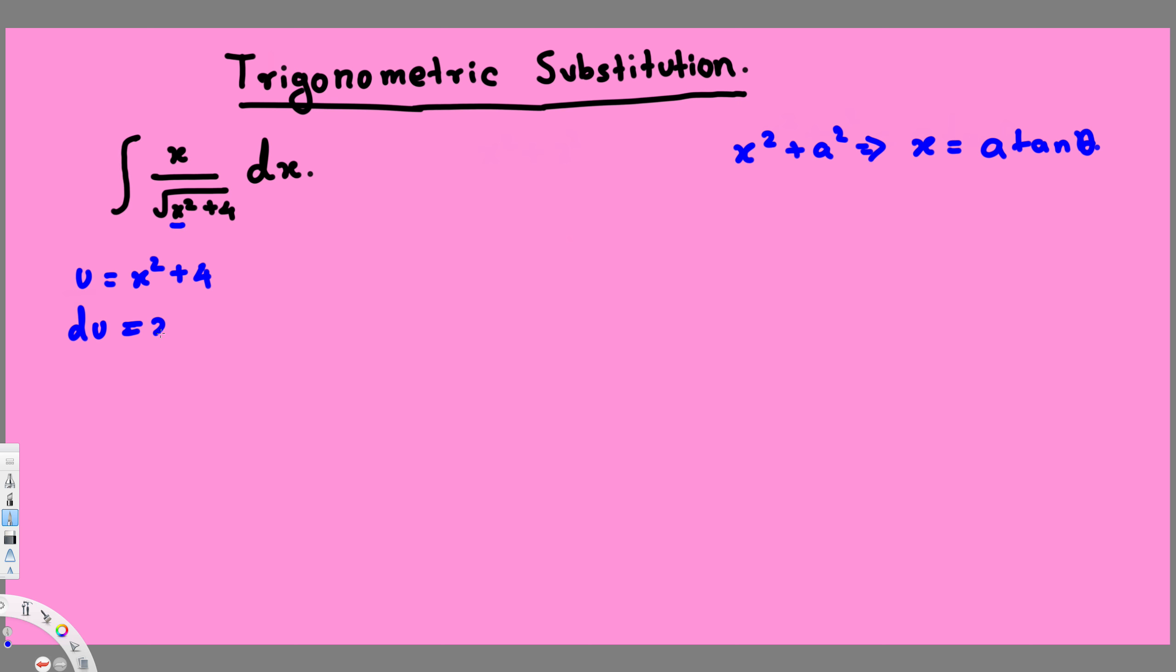Now here we have x dx, so to replace x dx we have to have du by 2, because if I bring this 2 to this side I can have x dx.